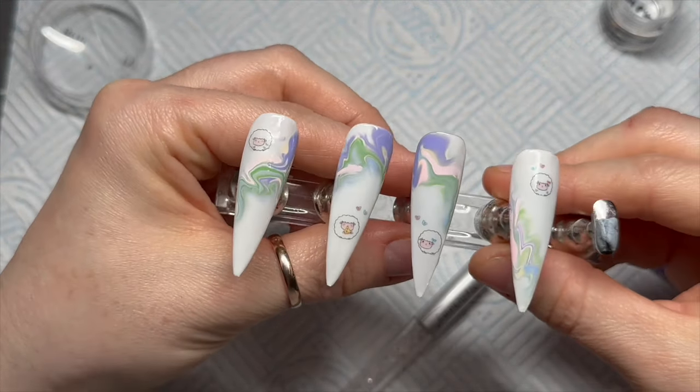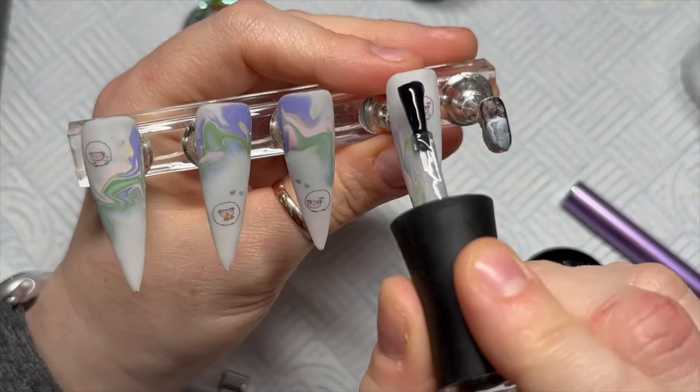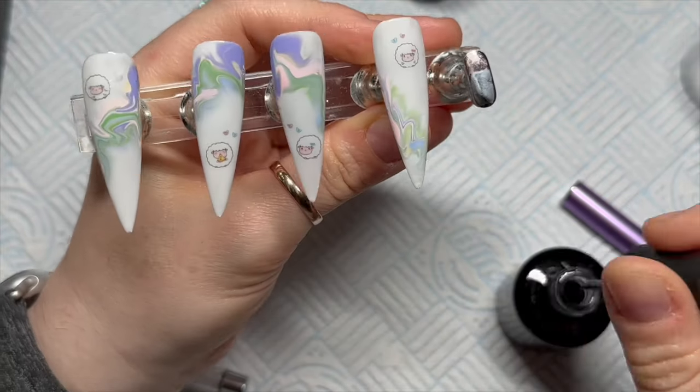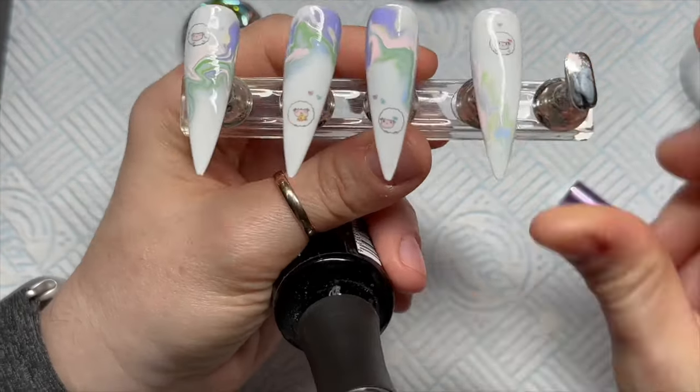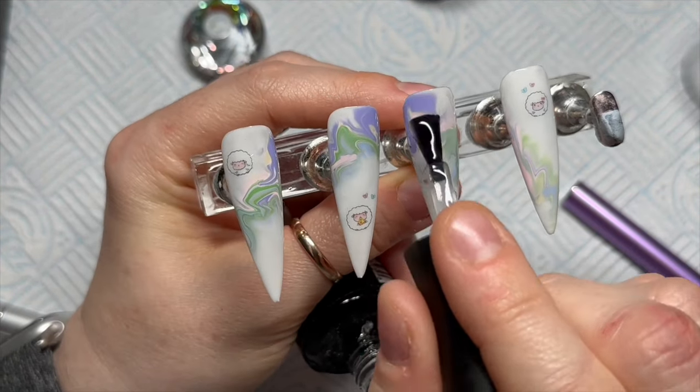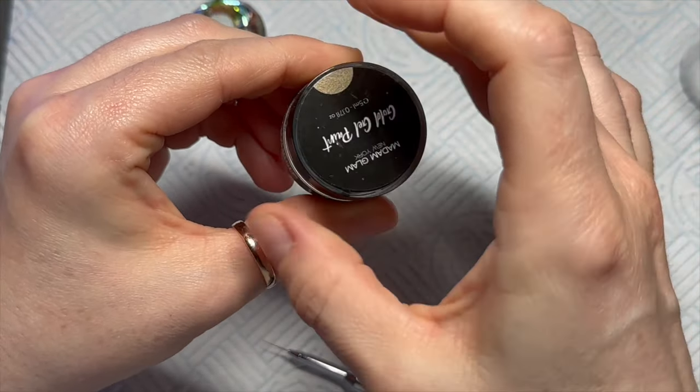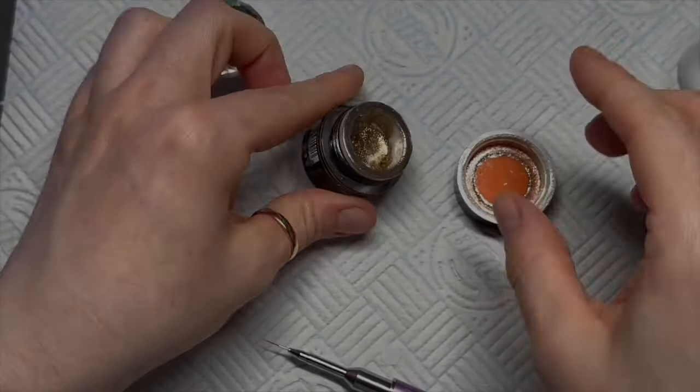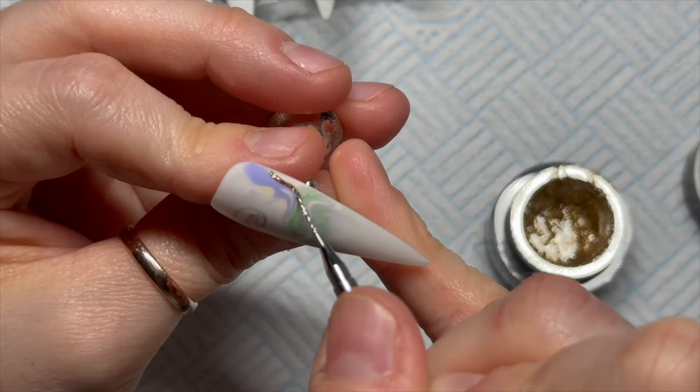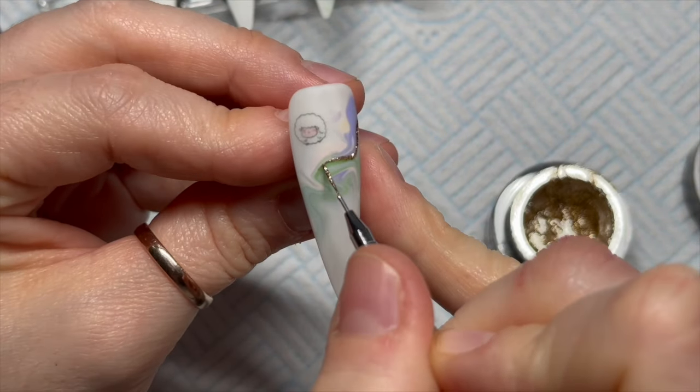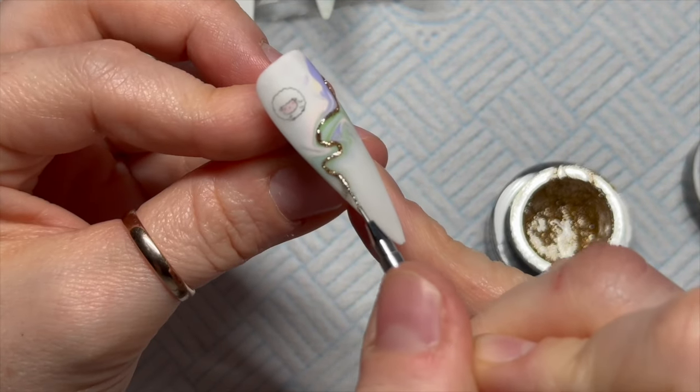To finish them we're going to top coat them. I am going to use the Velvet Matte Top Coat from Madam Glam. Madam Glam's Velvet Matte Top Coat is my favorite matte top coat that I've used to date, I absolutely love it. We're going to do that over all four of the nails, pop it in the lamp for 30 seconds, and then I'm going to use Madam Glam's gold gel paint to finish this off. I'm using my detailer brush now and I'm going to run a little bit of that gold gel paint through the marble, so it's kind of following the shape of the marble.